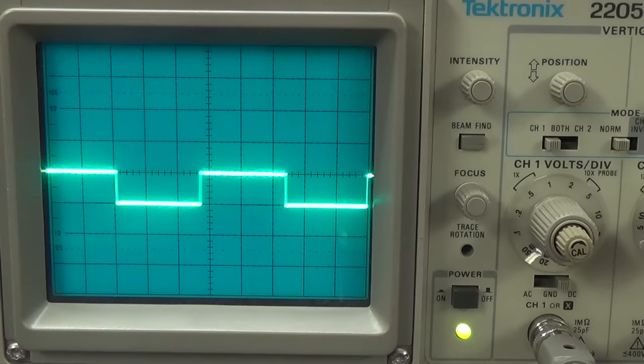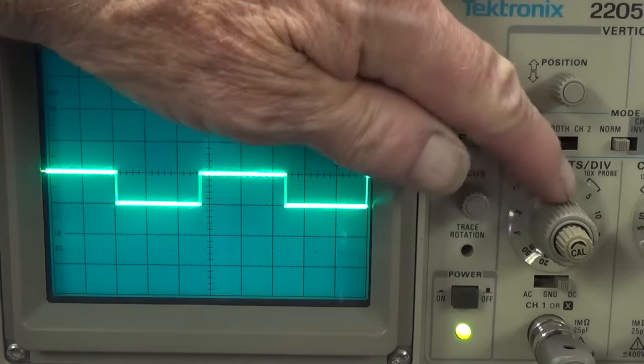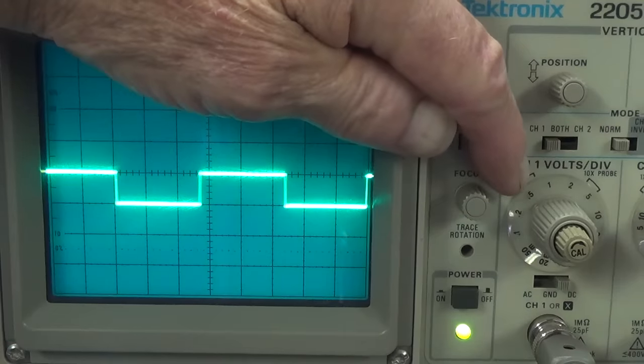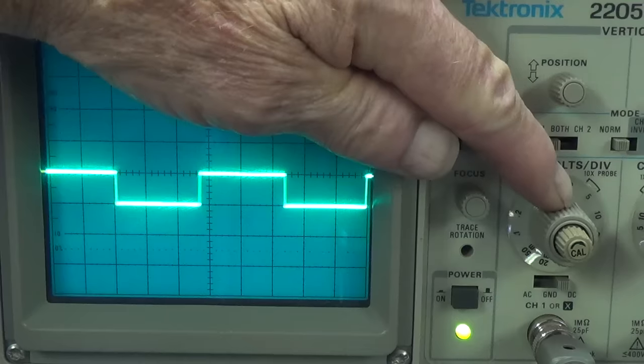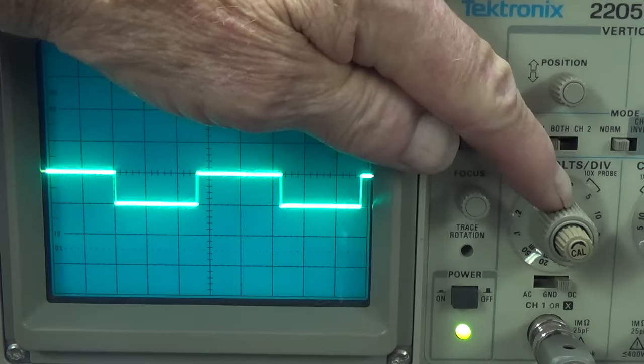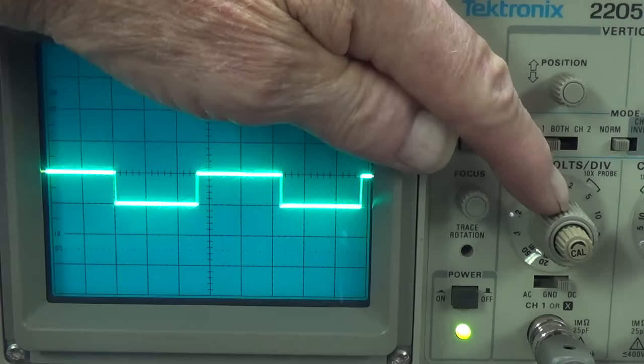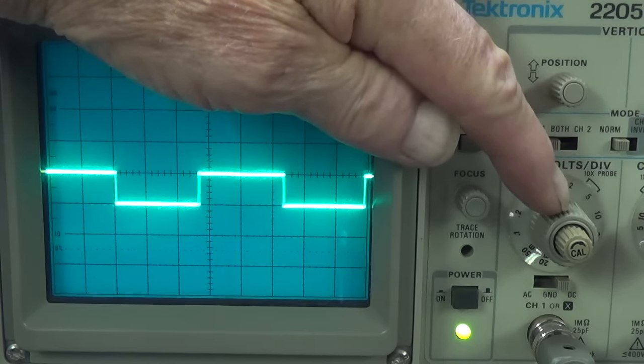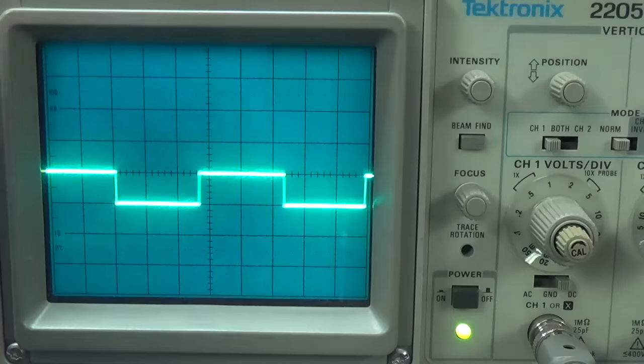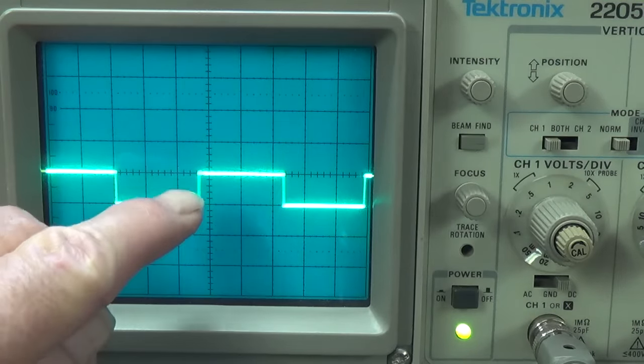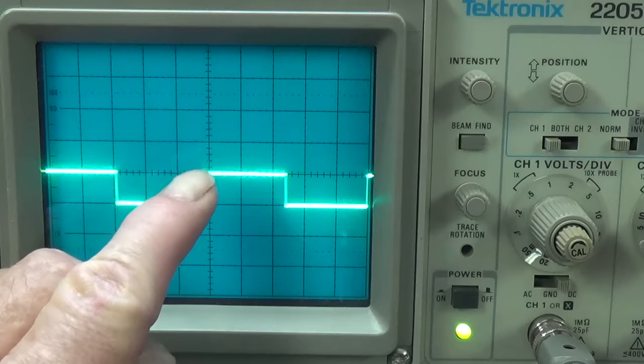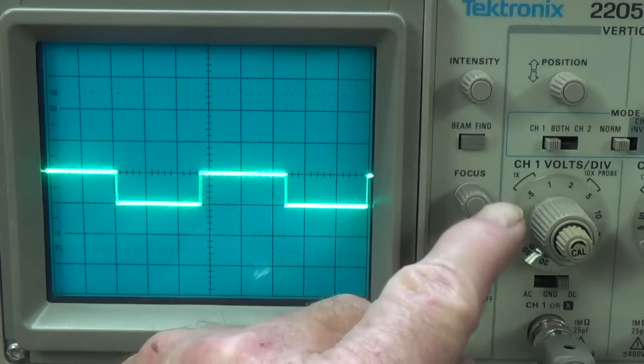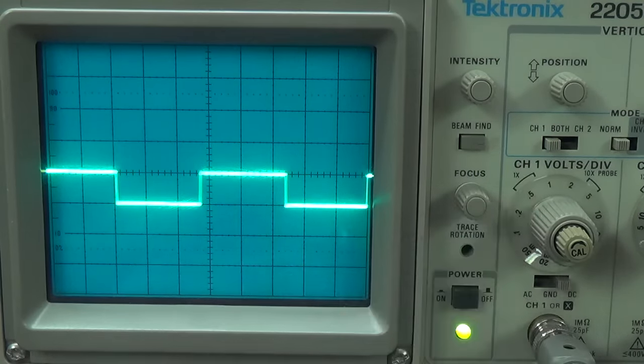Now, if it made sense to you that setting the channel 1 deflection to 0.5 volts per square with this knob, and then inputting into our oscilloscope a 0.5 volt square wave, and we see this on the screen. And sure enough, one square of deflection vertically is exactly 0.5 volts just as I set it. Now, if that makes sense to you, that's it, okay?